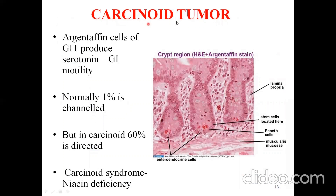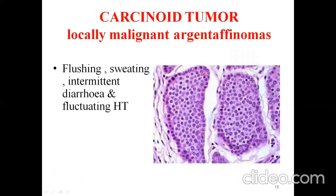Carcinoid tumors arise from argentaffin cells — neuroendocrine cells distributed throughout the GI mucosa that produce serotonin responsible for GI motility. Normally only 1% of tryptophan is channeled to serotonin synthesis, but in carcinoid tumors, 60% is directed toward serotonin. Because tryptophan is largely diverted to serotonin, patients with carcinoid syndrome present with niacin deficiency. Locally malignant argentaffinomas cause flushing, sweating, intermittent diarrhea, and fluctuating serotonin levels.